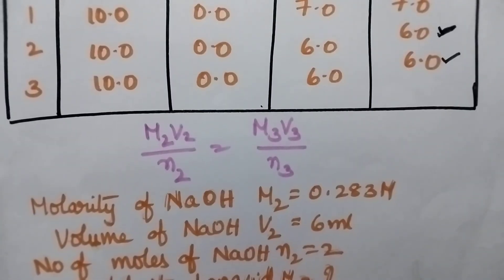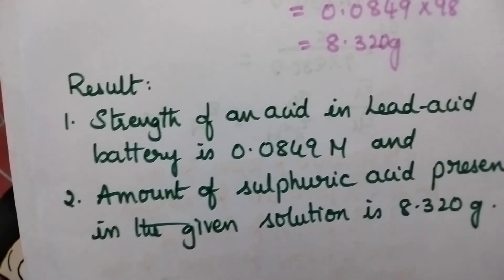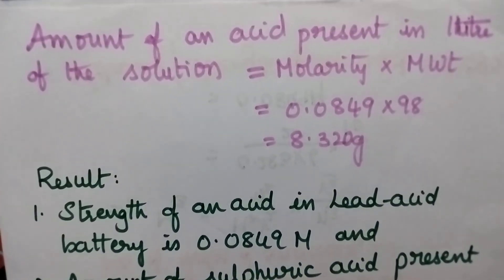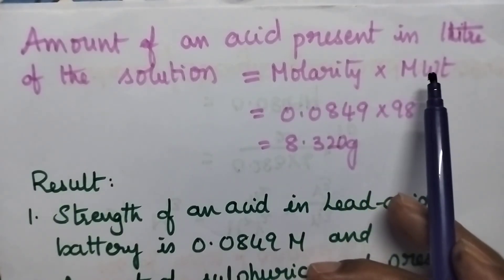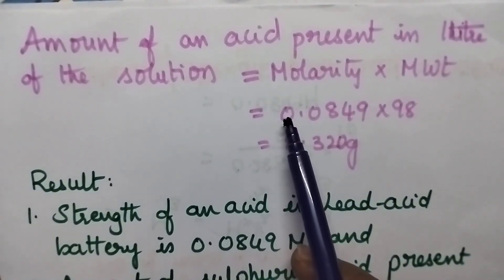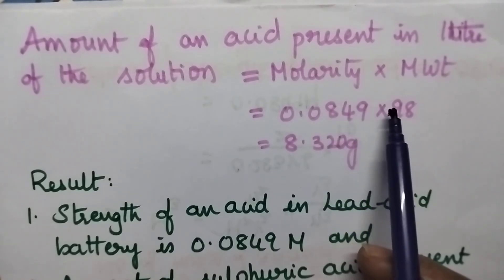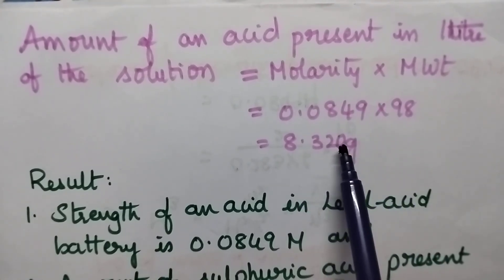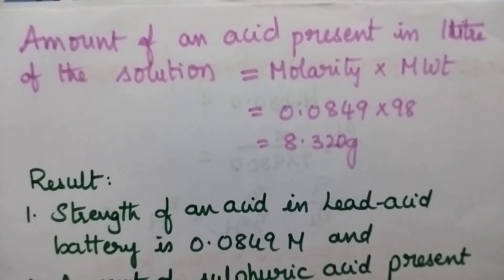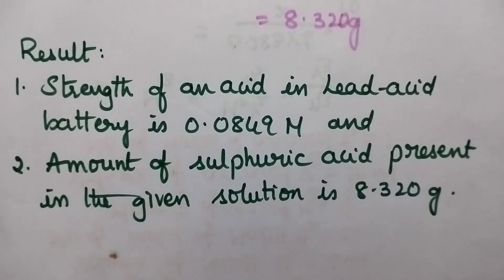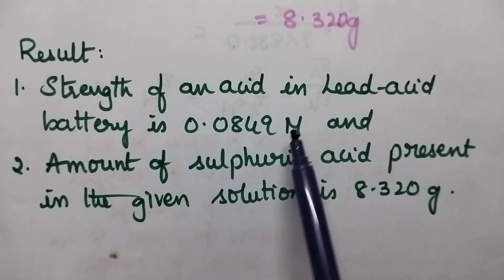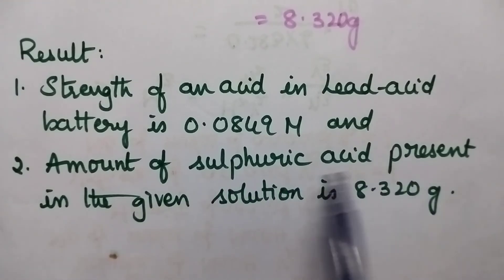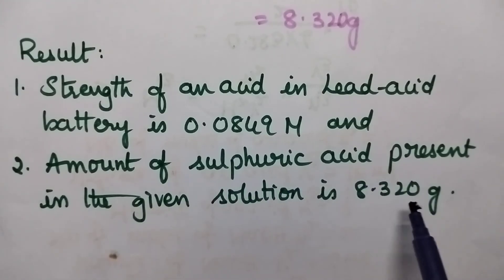Once the molarity of the solution is calculated, it is possible to determine the amount of acid present in the lead acid battery using the expression: molarity × molecular weight. That is equal to 0.0849 × 98 = 8.3020 grams. Finally, the strength of the sulfuric acid present in the lead acid battery is 0.0849 molar, and the amount of sulfuric acid present in the given solution is 8.320 grams.